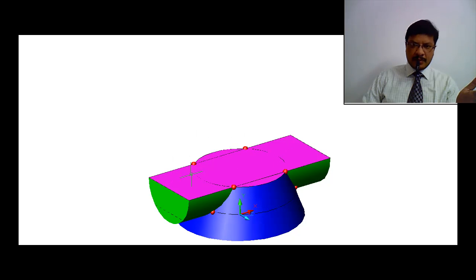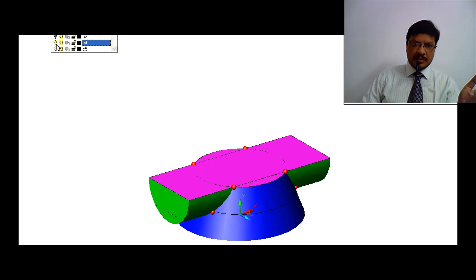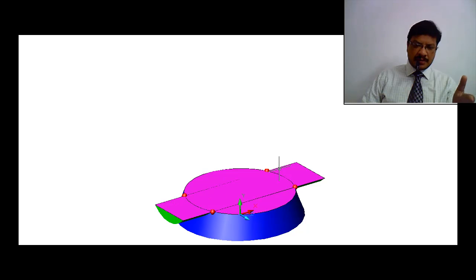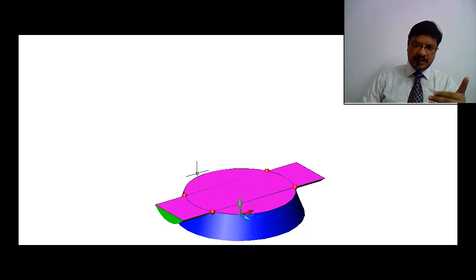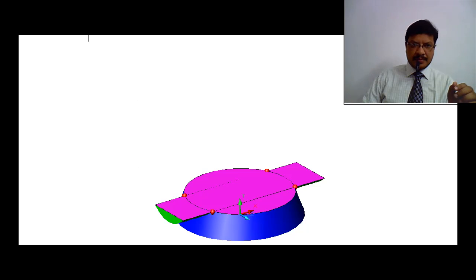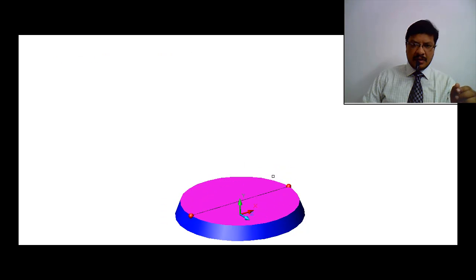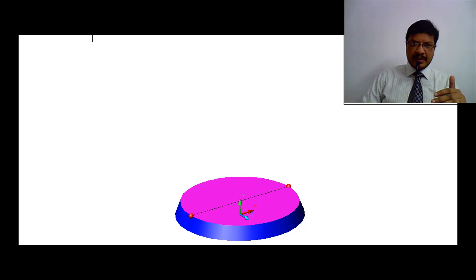Taking another section, I get another rectangle and a circle with increased radius, again giving four cutting points. With one more section, the rectangle size decreases but the circle size increases, giving four more points. My last section is just touching the cylinder, so the circle and line intersect to give only two points. These are all the various points obtained by taking these cutting sections.